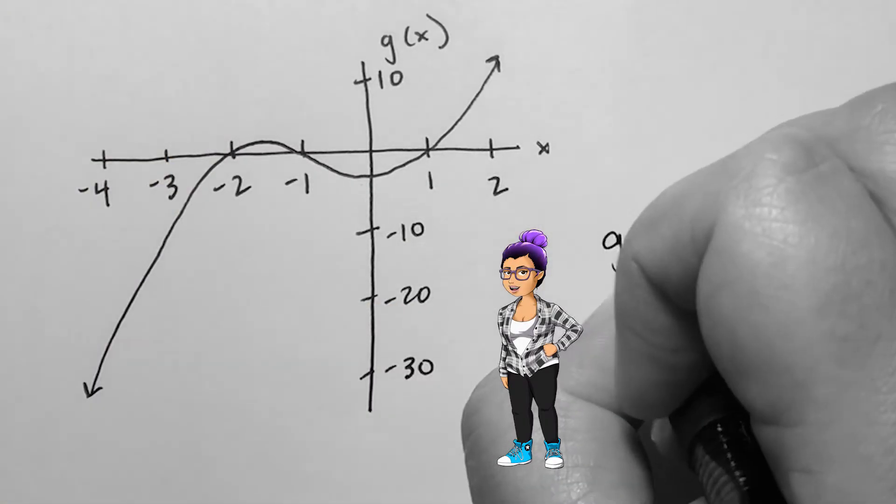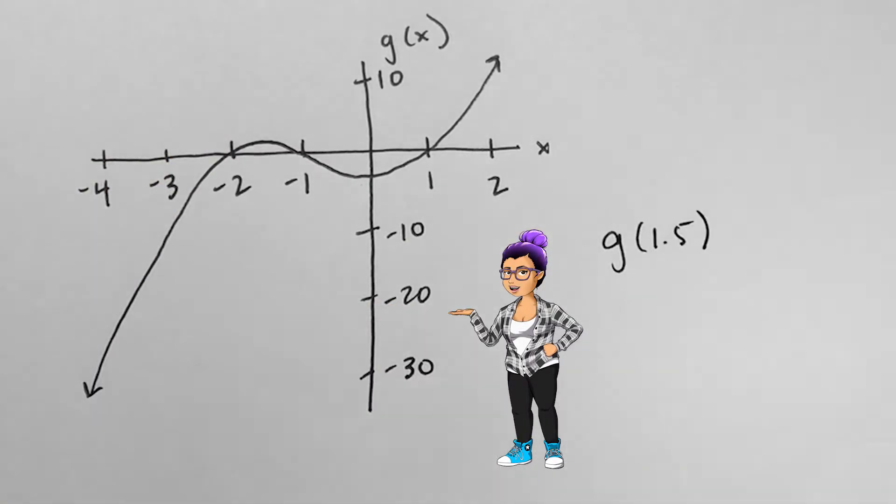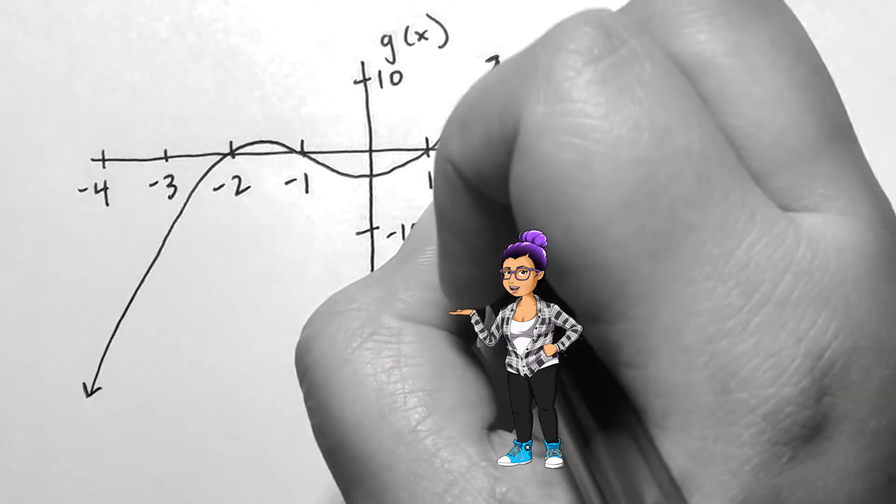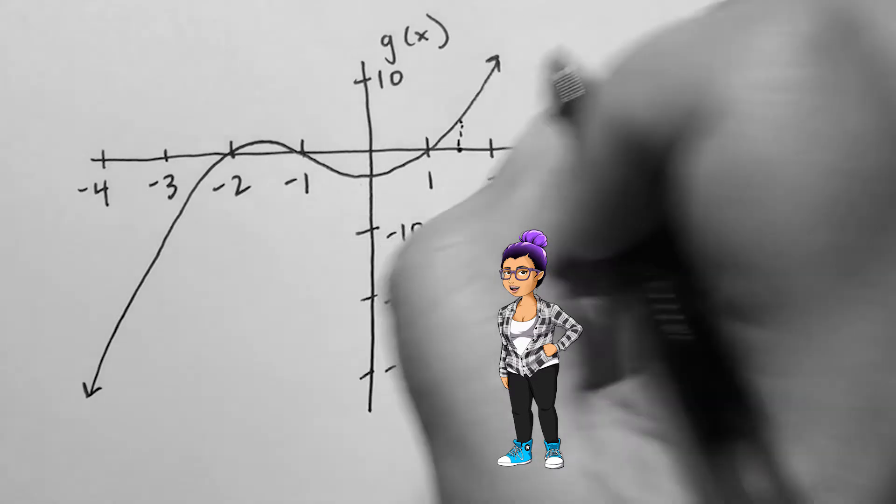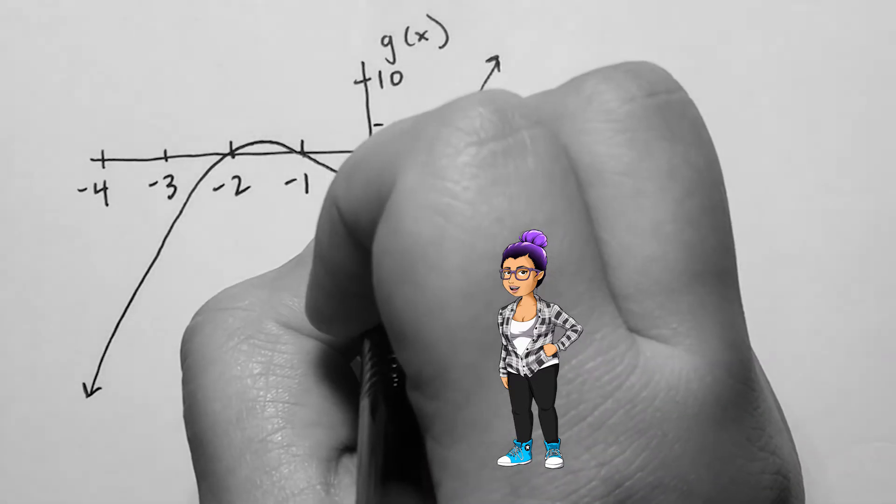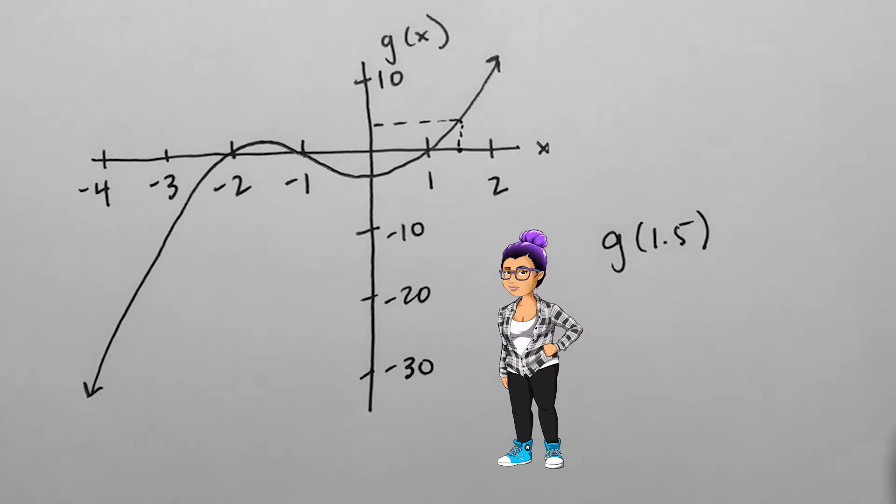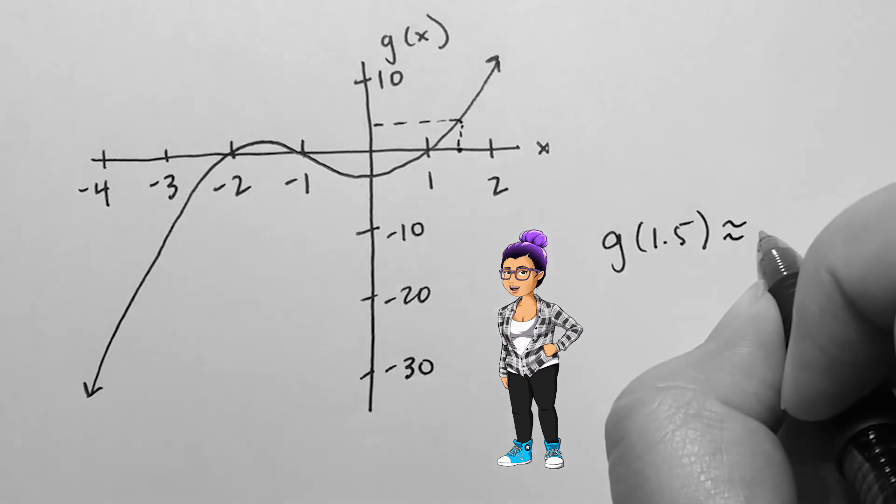I can also estimate values from a graph. If I have this graph called g with inputs x, I could find g of 1.5 by finding 1.5 on the input's axis, then find the appropriate output. A reasonable answer would be anywhere between 3 and 5 here.